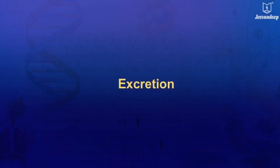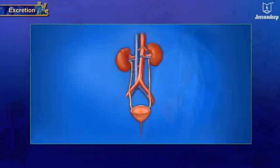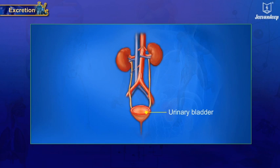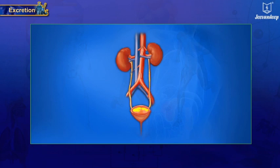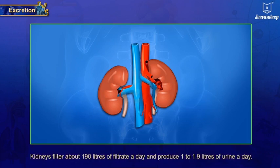Excretion: the process by which unwanted harmful substances are eliminated from the body is called excretion. In human beings, the excretory system consists of a pair of kidneys, a pair of ureters, urinary bladder, and urethra. Kidneys remove waste products from the blood in the form of urine. Kidneys are a pair of bean-shaped structures lying at the back of the abdomen, one on either side of the vertebral column.